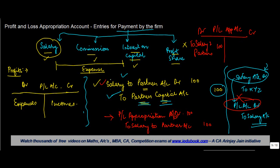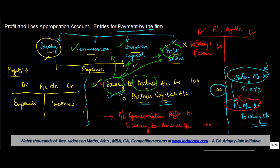Just like the example of salary to partner, similarly all the other entries — namely commission, interest on capital, and profit share of partner — have similar entries. Instead of the Salary to Partner Account, you will have Commission to Partner, Interest on Capital, or Share of Profits. All of them will be debited; the Partners' Capital Account will be credited. Then, to transfer this to the P&L Appropriation Account, you debit the P&L Appropriation Account and credit the respective account — for example, Salary to Partners — and post this entry in the P&L Appropriation Account.